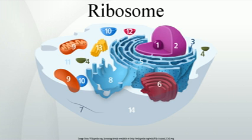Ribosomes are classified as being either free or membrane-bound. Free and membrane-bound ribosomes differ only in their spatial distribution; they are identical in structure. Whether the ribosome exists in a free or membrane-bound state depends on the presence of a signal-targeting sequence on the protein being synthesized, so an individual ribosome might be membrane-bound when it is making one protein, but free in the cytosol when it makes another protein.